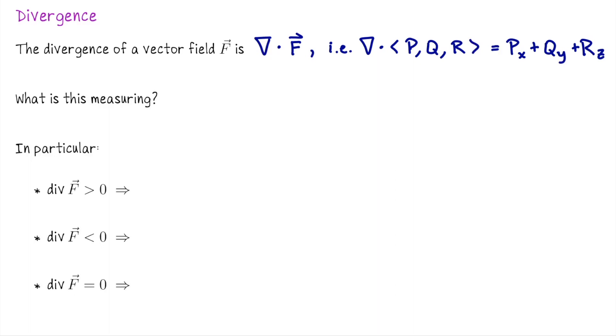What this is measuring is the tendency of the vector field to expand versus contract or stay the same. In particular, if you imagine your vector field is modeling a gas, if the divergence is positive, then we would observe expansion. If it's negative, it would look like compression. And if the divergence is always zero, then we say that vector field is incompressible.